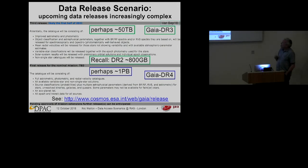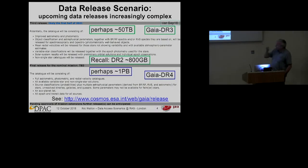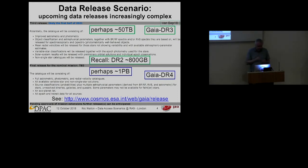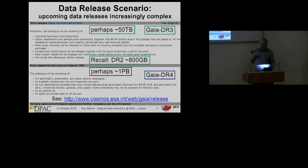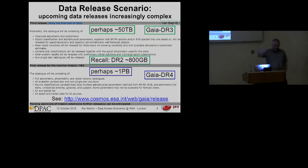On the Gaia release scenario page, DR3 is stated as being first half of 2021, and the nominal mission final release covers the five-year mission data — though Gaia has already had its first mission extension approved and could end up as a ten-year mission. DR2 was about 800 gigabytes — a very rich, information-dense dataset. The next release, DR3, is probably going to be of the order of 50 terabytes, depending on what data products are included.